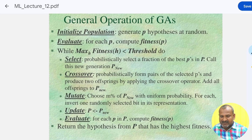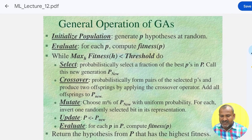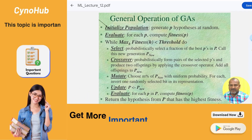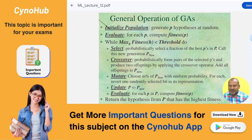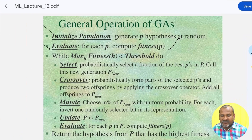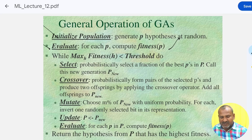In the genetic algorithm, first we initialize the population — generate a small set of hypotheses at random. Next, for each population member we compute the fitness function. While the maximum fitness of hypothesis h tends to a threshold, we proceed through the main steps.